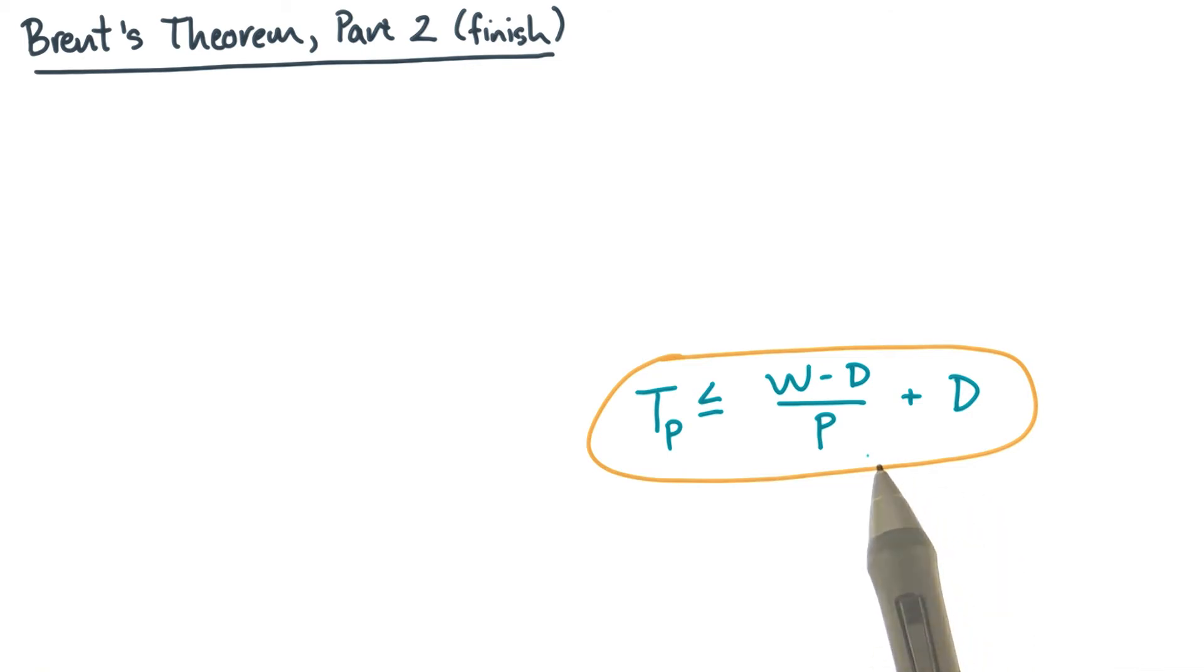This is Brent's theorem. And what you've done is very intuitive to interpret too. Brent's theorem says that the time to execute the DAG is no more than the time to execute the critical path, plus the time to execute everything off of the critical path using the P processors.